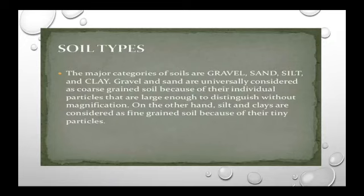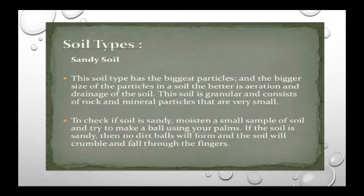Gravel and sand are coarse grain because the individual particles are large enough to distinguish without magnification. On the other hand, silt and clay are considered as fine grain soil because of their tiny particles. So it almost depends upon the size of the particles.